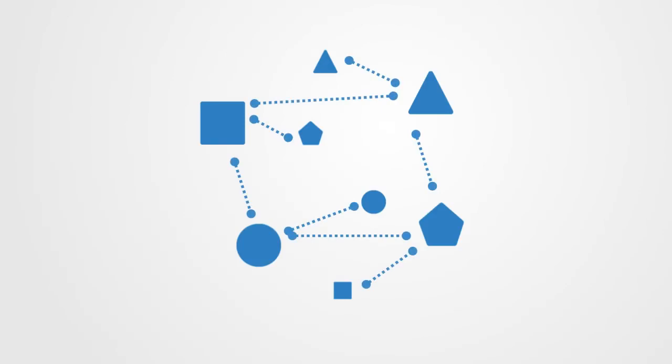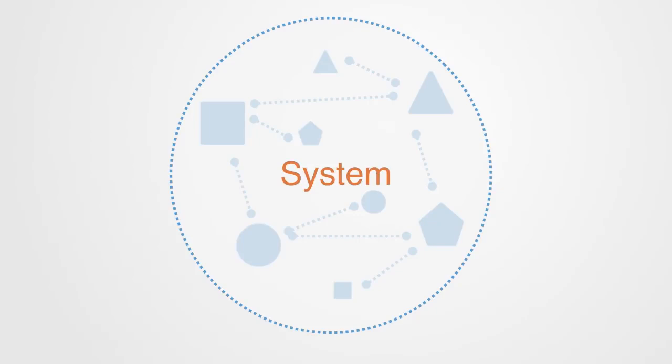So that is the basic model of a system. It consists of elements and relations. When those elements work together, we get the emergence of a new level of organization.